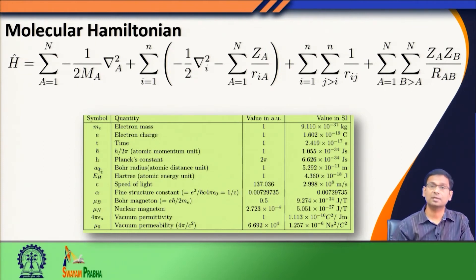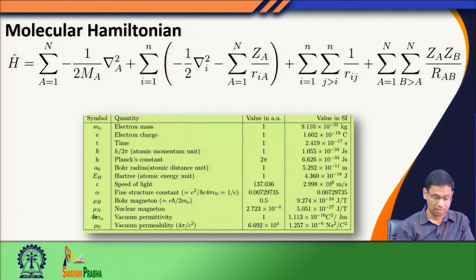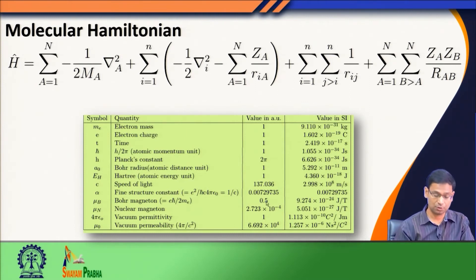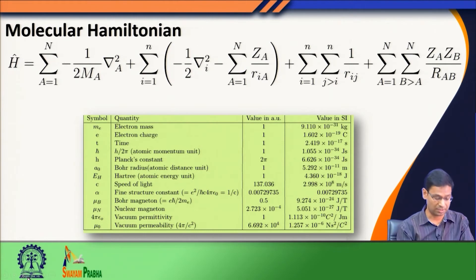Bohr's radius is the unit of length in atomic unit, made equal to 1, which is equivalent to 0.53 angstrom. If you see the Bohr magneton that we discussed while discussing the Zeeman effect, it is expressed as eℏ divided by twice mₑ. Since e is 1 in atomic unit, ℏ is 1 in atomic unit, and mass of electron is 1 in atomic unit, the Bohr magneton μ_B simply becomes one-half. By using atomic units we can simplify our description of the Hamiltonian quite a bit.